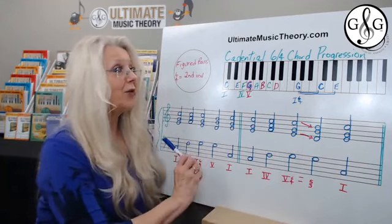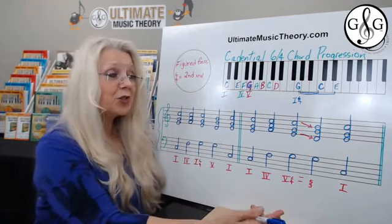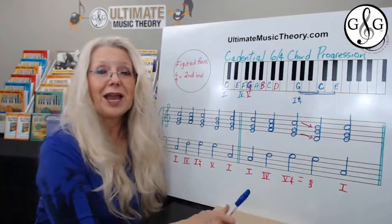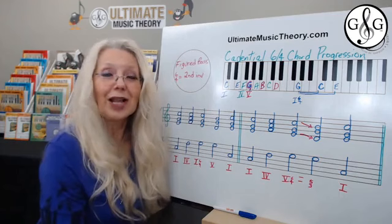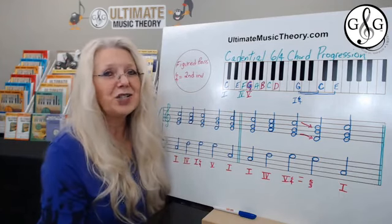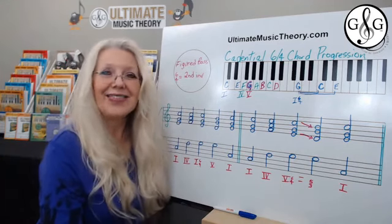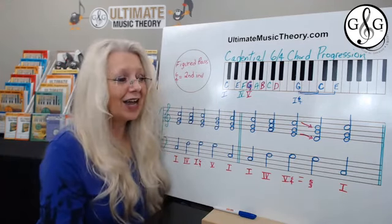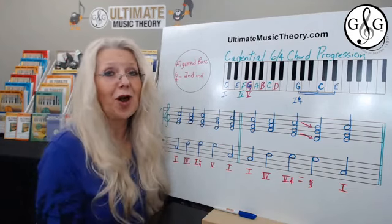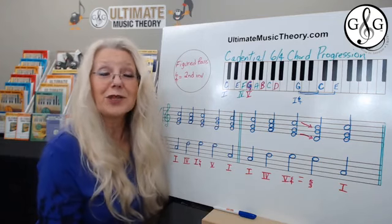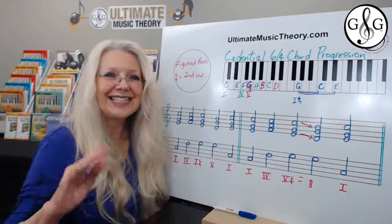This is how you write the cadential 6-4 chord progression — mapping it out makes it super simple. Make sure you subscribe to the Ultimate Music Theory YouTube channel, where we release new videos every week, and join us on the Ultimate Music Theory Facebook group. Looking forward to seeing you in the next video — have a great day!